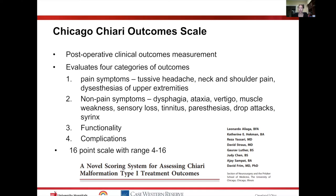The Chicago Chiari Outcome Scale is a post-operative clinical outcomes measurement — based on clinical outcome, not quality of life. It evaluates four categories: pain symptoms (headache, neck or shoulder pain, dysesthesias of the upper extremities); non-pain symptoms (dysphagia, ataxia, vertigo, weakness, sensory loss, paresthesias, tinnitus, drop attacks, syrinx); overall function; and complications from surgery. It is a 16-point scale ranging from 4 to 16, with each category scored 1 to 4.